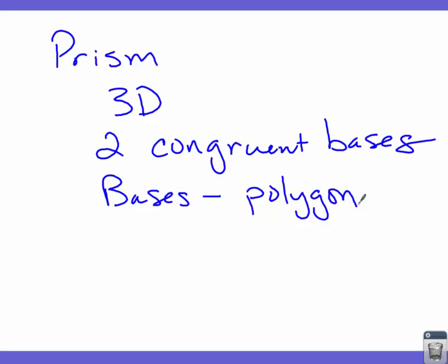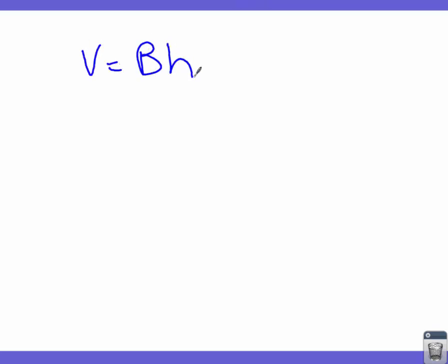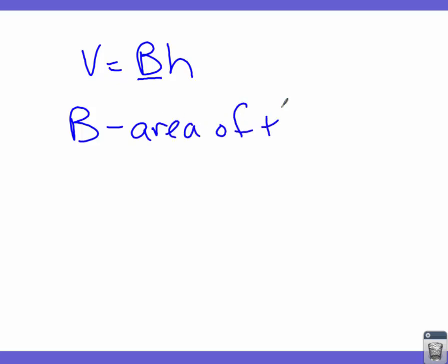We're talking about volume of prisms and cylinders together because they share one volume formula. The formula is volume equals capital B times H. We need to understand that the capital B stands for area of the base.